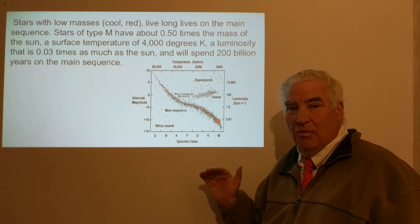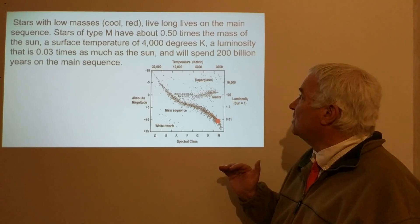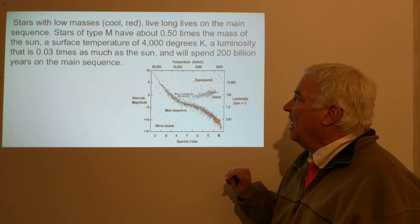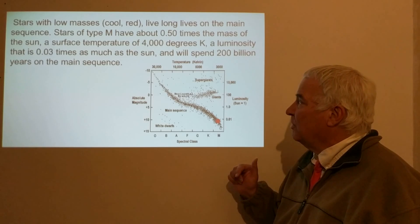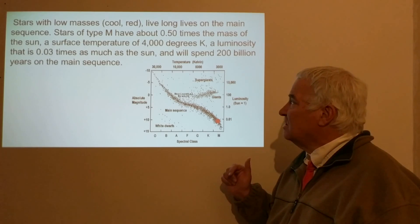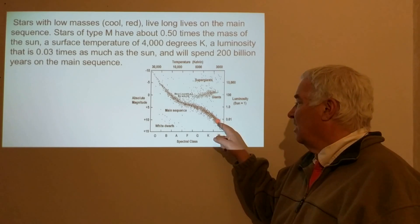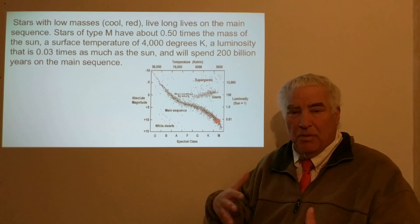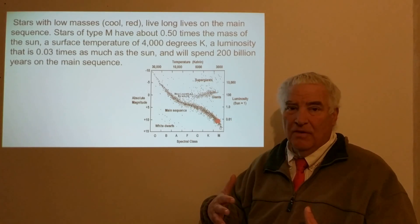And the temperature of about 4,000 degrees Kelvin, and we think of that as being, well that's very hot what we would think, but cool for a star. And it appears red in the sky, and it's about 0.03, three percent, as luminous as the Sun.